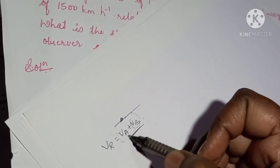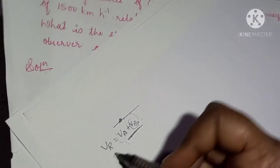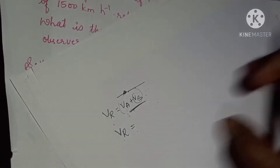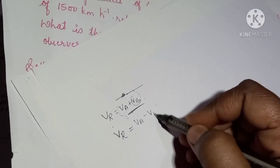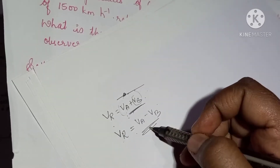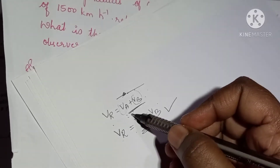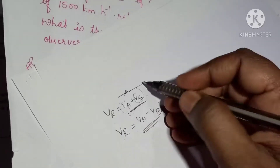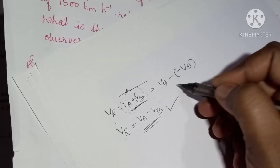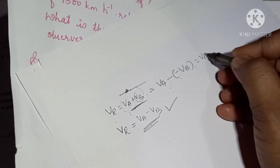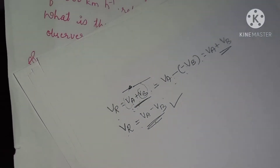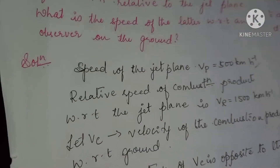The general equation for relative velocity is VA minus VB when the objects move parallel and in the same direction. But when they are opposite to each other, the relative velocity is VA plus VB.